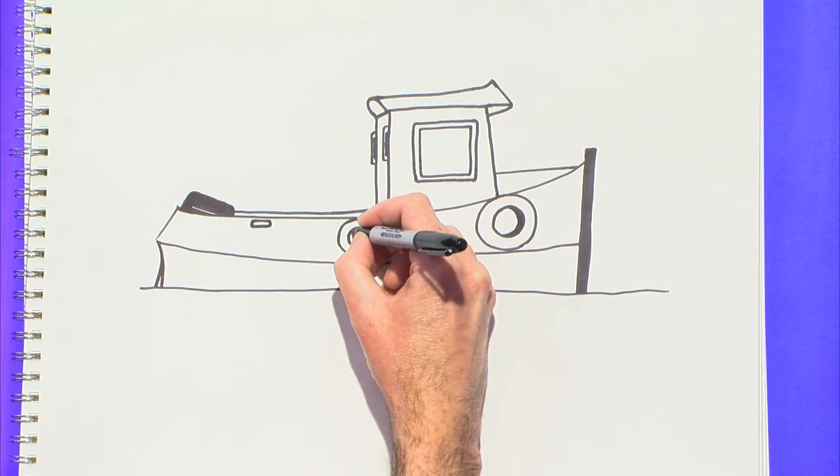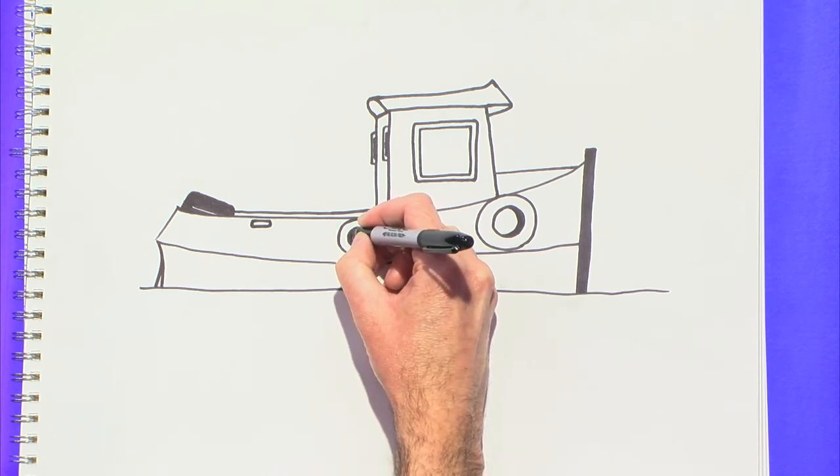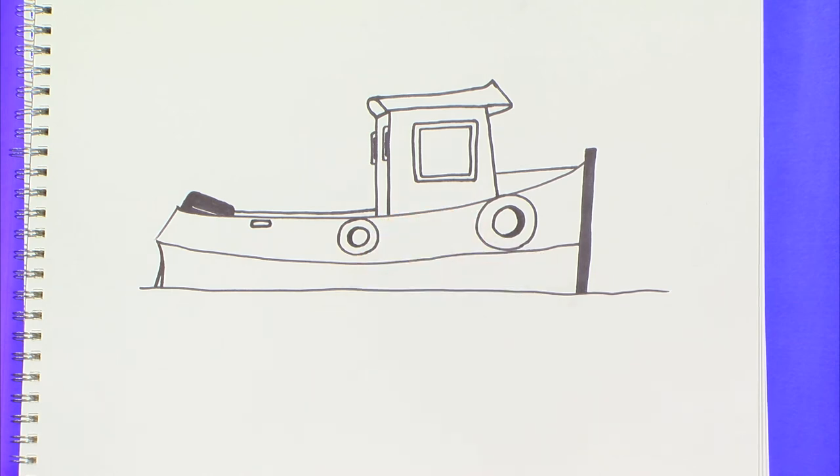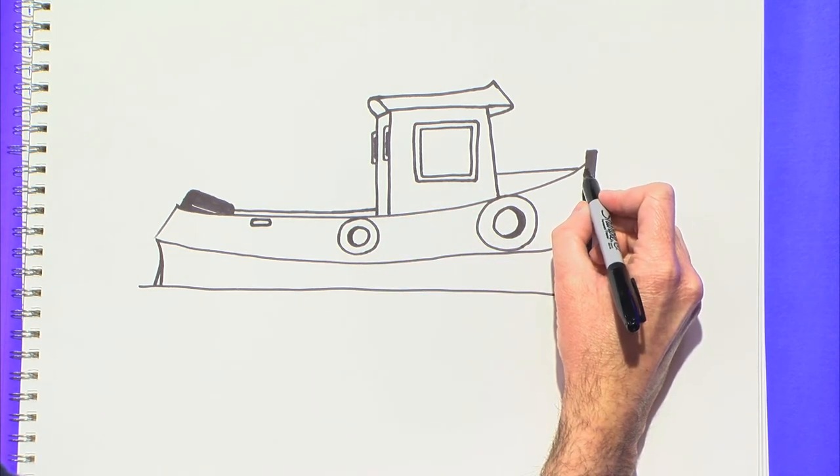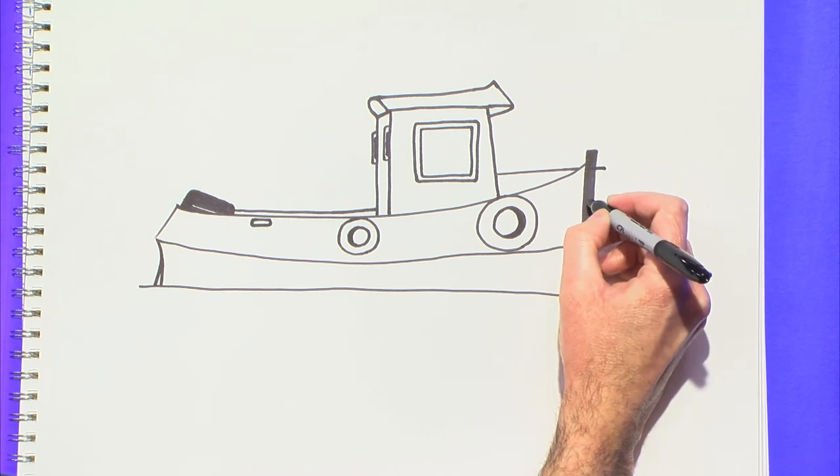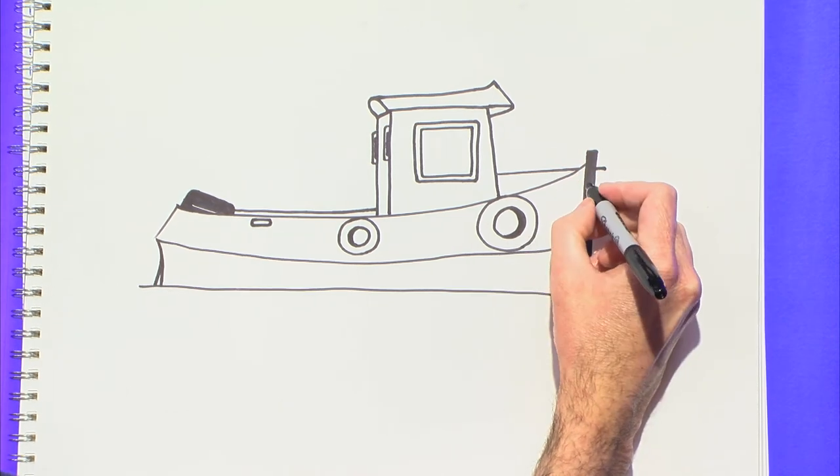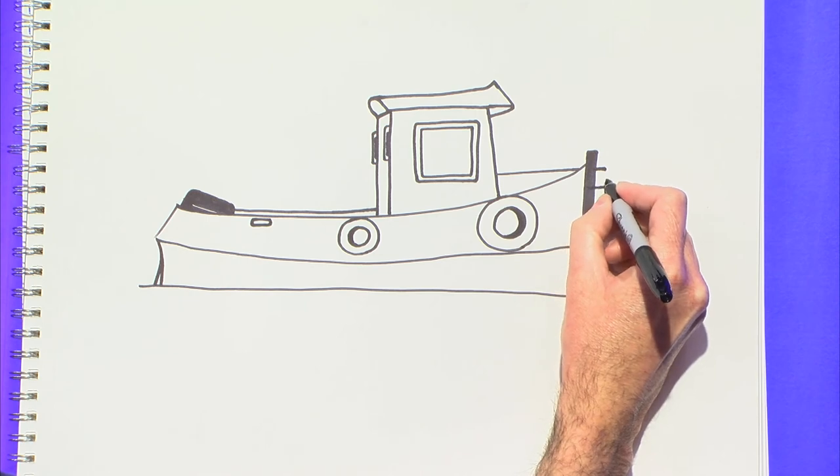And on this one, it'll be the opposite. So we'll make a little bit right there. And then up on the front here, we're going to make a tire that's wrapped around the bow here, sideways.